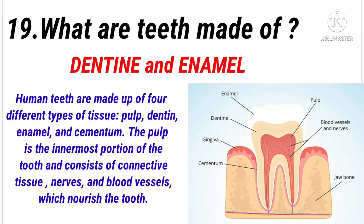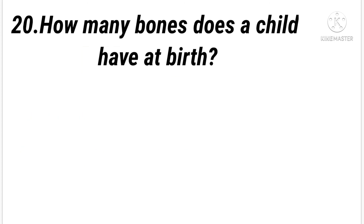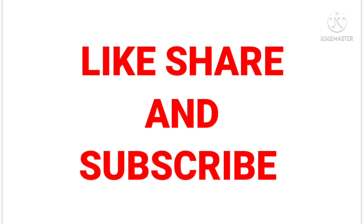What are the teeth made of? Answer: Dentin and enamel. How many bones does a child have at birth? Answer: 300.